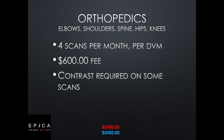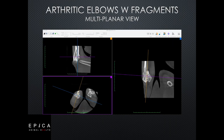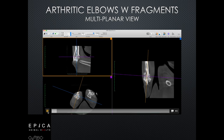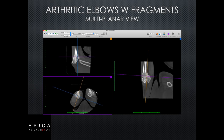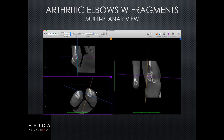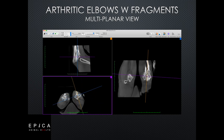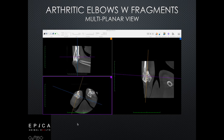We normally see about four scans per month in orthopedics for each associate veterinarian full-time. A $600 fee is what we're charging for an orthopedic scan. Sometimes we use contrast in orthopedics, and sometimes there's no need. Our first example is arthritic elbows with fragments in a multiplanar view. These elbows were scanned bilaterally at the same time with no contrast, and it took about the same time as scanning a skull — about 30 seconds for the scan and another 30 seconds to render the data set.